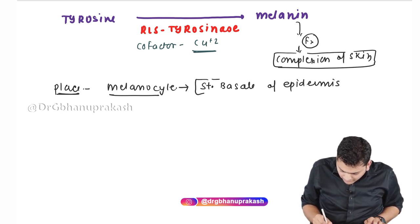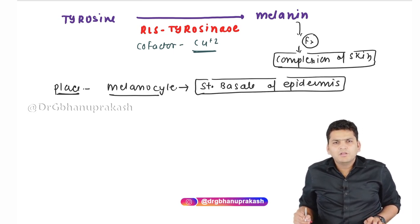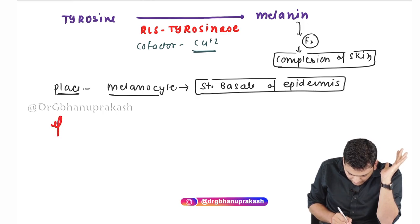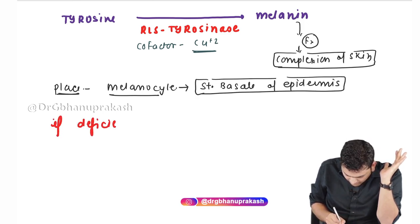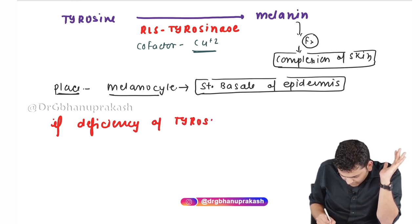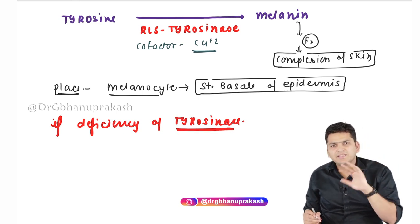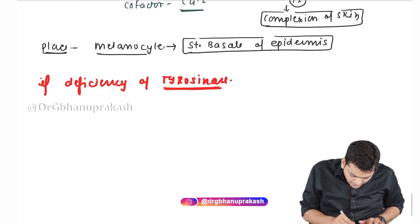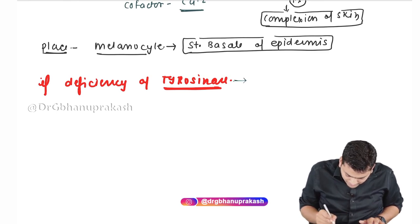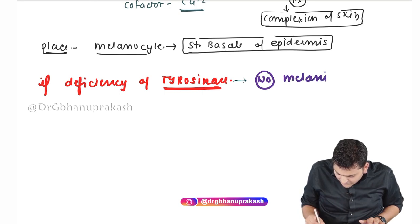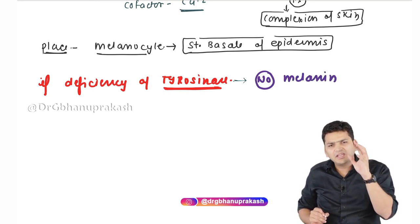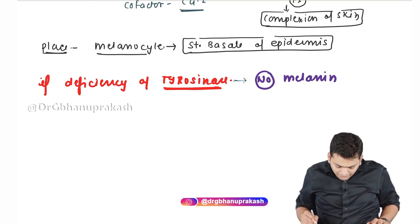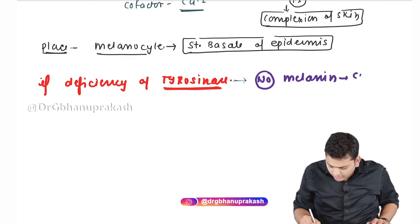Sometimes, tyrosinase may be congenitally absent. If there is complete deficiency of tyrosinase, melanin is not going to be synthesized — there will be severe depletion of melanin, essentially no melanin. If there is no melanin, there will be no dark complexion; the person will be completely white. This is referred to as albinism — deficiency of tyrosinase leads to no melanin, and that is called albinism.